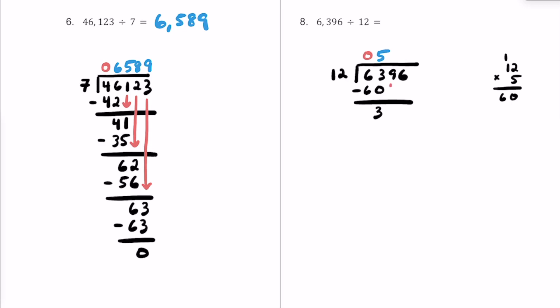Let's bring this 9 down and repeat the process. Now it's 12 into 39. 12 times 3: 3 times 2 is 6, 3 times 1 is 3, so that's 36. I think that's as close as we can get. Let's put a 3 here. 3 times 12 is 36, and 39 minus 36 is going to be 3.